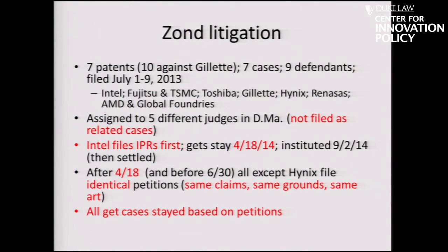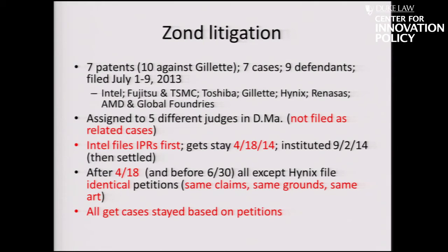Seven patents were asserted against multiple defendants in seven cases and nine defendants — ten against Gillette — but on average, seven patents asserted in each case. There may have been some strategic behavior on the part of the patent owner: they filed in the District of Massachusetts but didn't file them as related cases, so they were assigned to five different judges. Intel filed the IPRs first and got a stay. That stay resulted in everyone piling on and filing identical petitions — same ground, same claim, same art — and they all got their cases stayed based on those petitions.